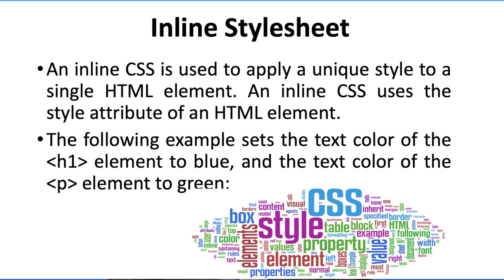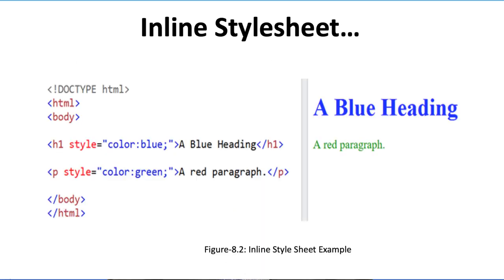We have the example: HTML, then doctype HTML, then HTML tag, then body tag, H1 style equals to color. The color attribute has the value blue. In the previous session, we covered that color here is a property and blue is the property value. So here we have the color property and its value is blue — a blue heading H1.